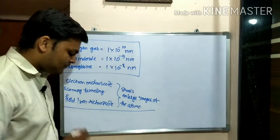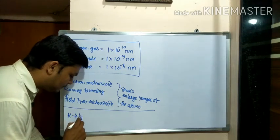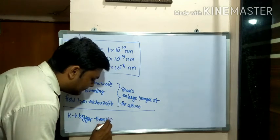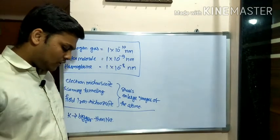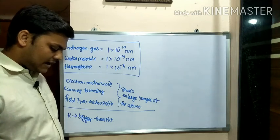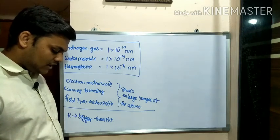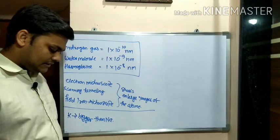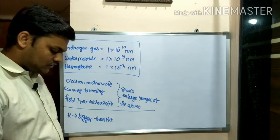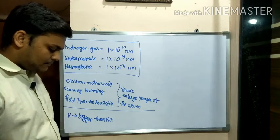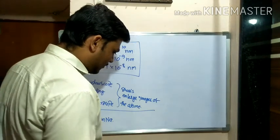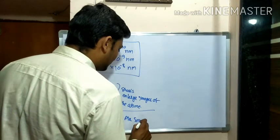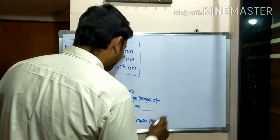For example, atom of potassium is bigger than sodium. If two atoms have the same outermost orbit, then the atom having the larger number of electrons in the outermost orbit is smaller than that of one having fewer electrons in the same outermost orbit. For example, the atom of magnesium is smaller than atom of sodium.